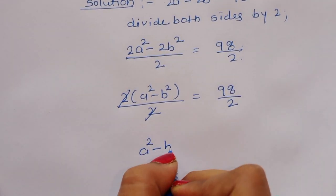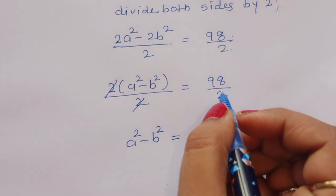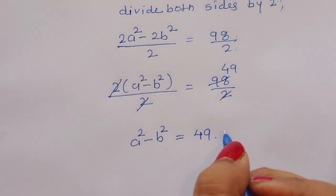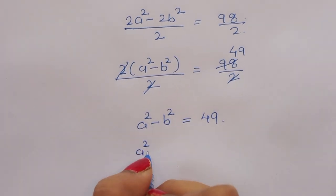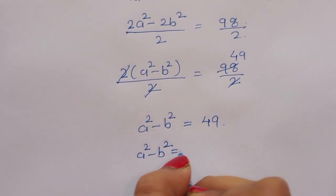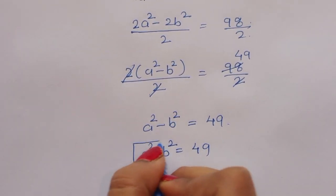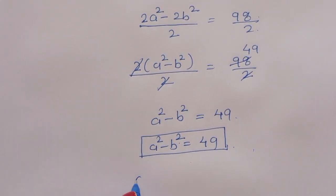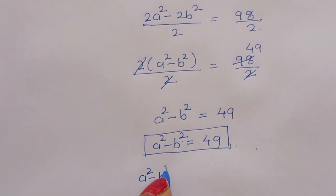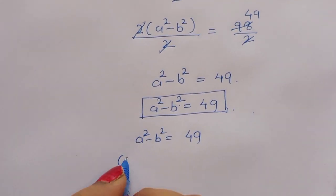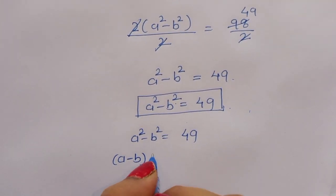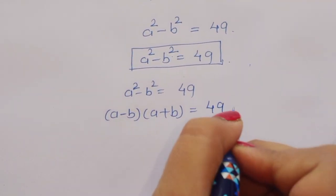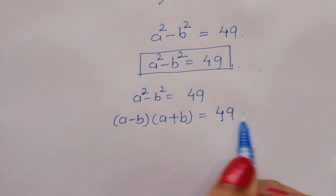Now a² minus b² is equal to 49. We can write this as: a² minus b² equals 49. Using the difference of squares formula, (a minus b) times (a plus b) equals 49. Now let's find the factors of 49.